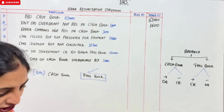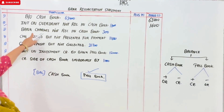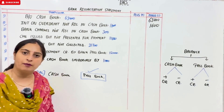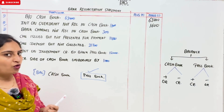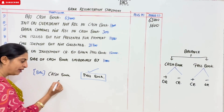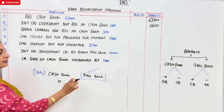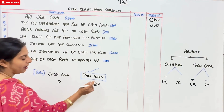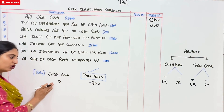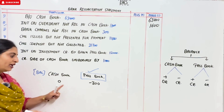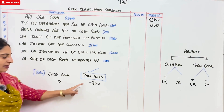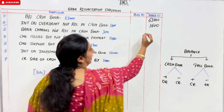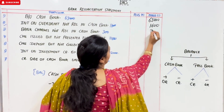Next thing is bank charges. Bank charges are not recorded in cash book. If it is not recorded, then it is zero. It means bank charges are not recorded in cash book. If it is minus here, then I will have to do the same total — minus. So it will go in this column.